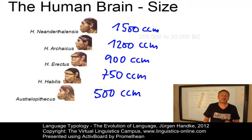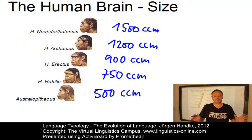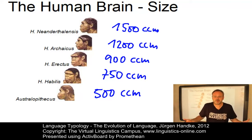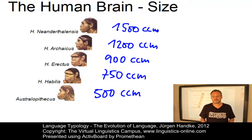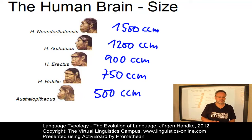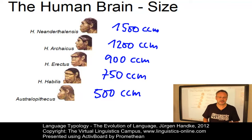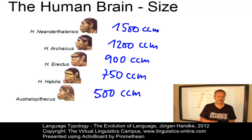Brain size alone is not the key factor. The brain of Homo neanderthalensis was even larger than ours, and you may know what happened. Thus we shouldn't solely examine the size, but rather the structure of the brain.